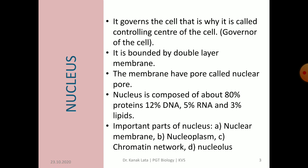Phosphorus is a component of DNA and RNA. The important parts of the nucleus are the nuclear membrane, nucleoplasm (also called karyolymph), chromatin network, and nucleolus.